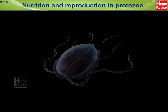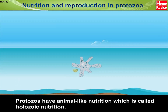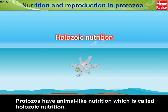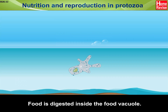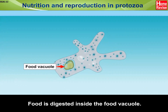Nutrition and Reproduction in Protozoa. Protozoa have animal-like nutrition which is called holozoic nutrition. Food is digested inside the food vacuole.